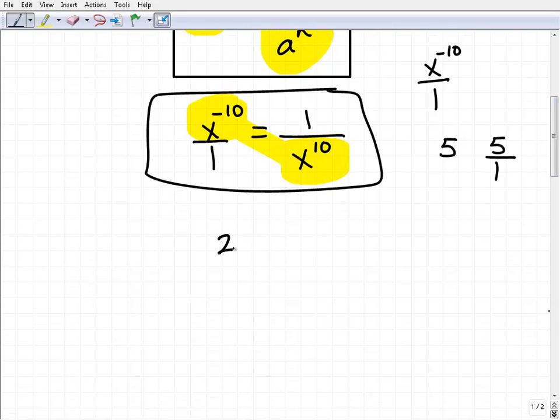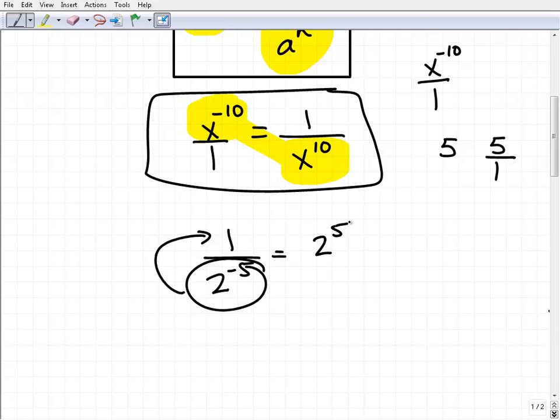If I have 1 over 2 to the negative 5th and I want to make that positive, if I just take this whole thing and move it upstairs, move it to the opposite side of the fraction bar, it becomes positive, 2 to the 5th.